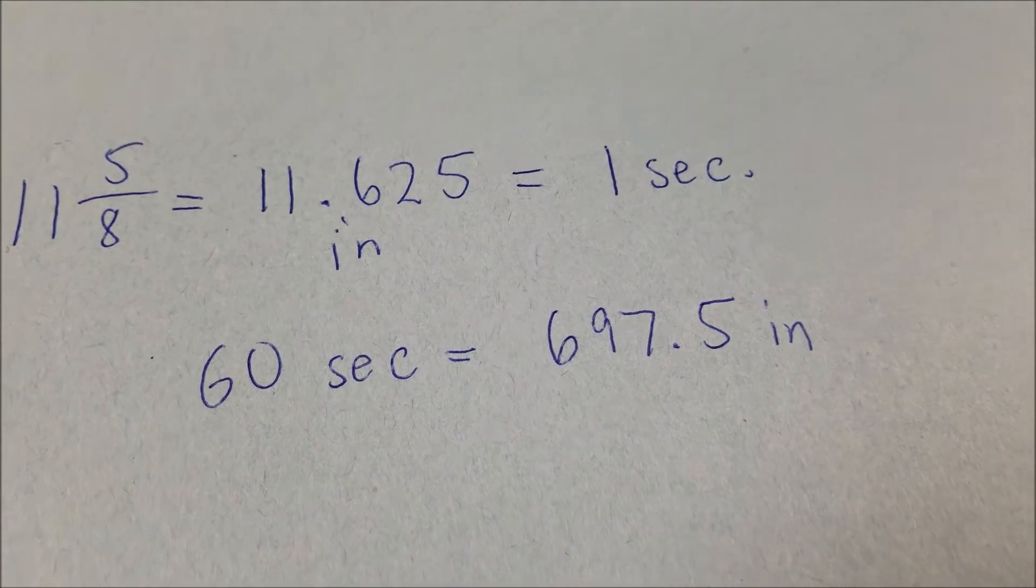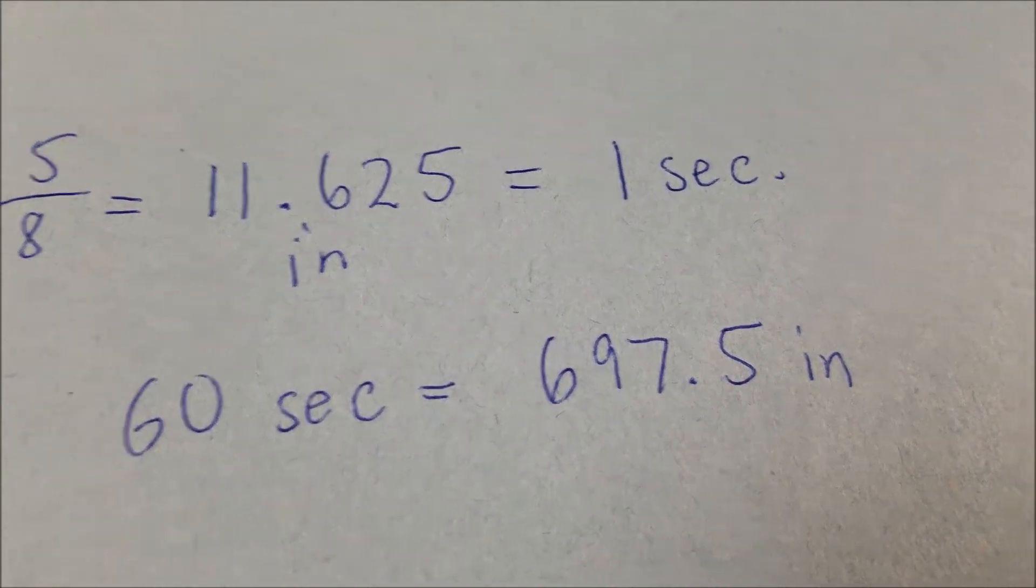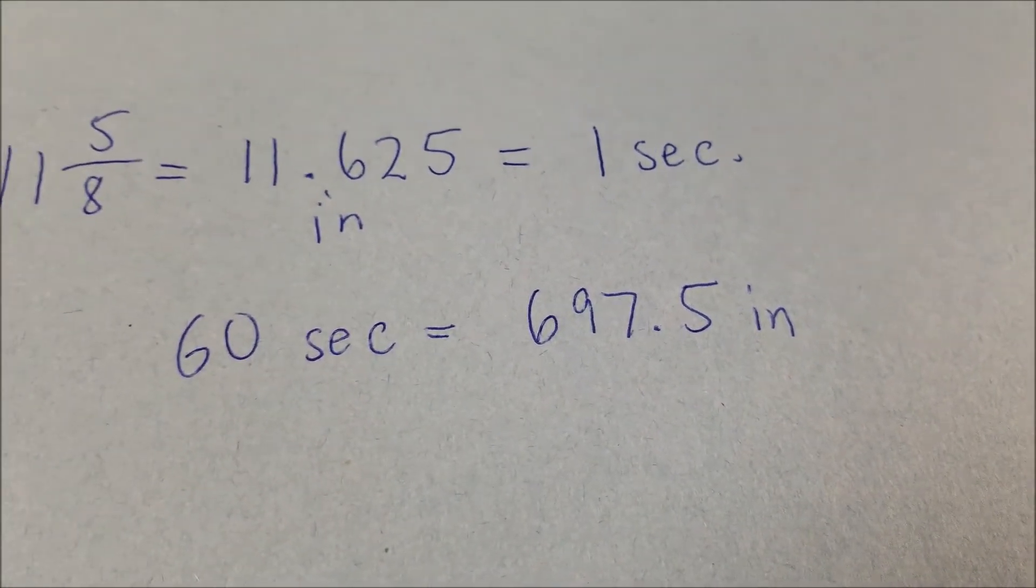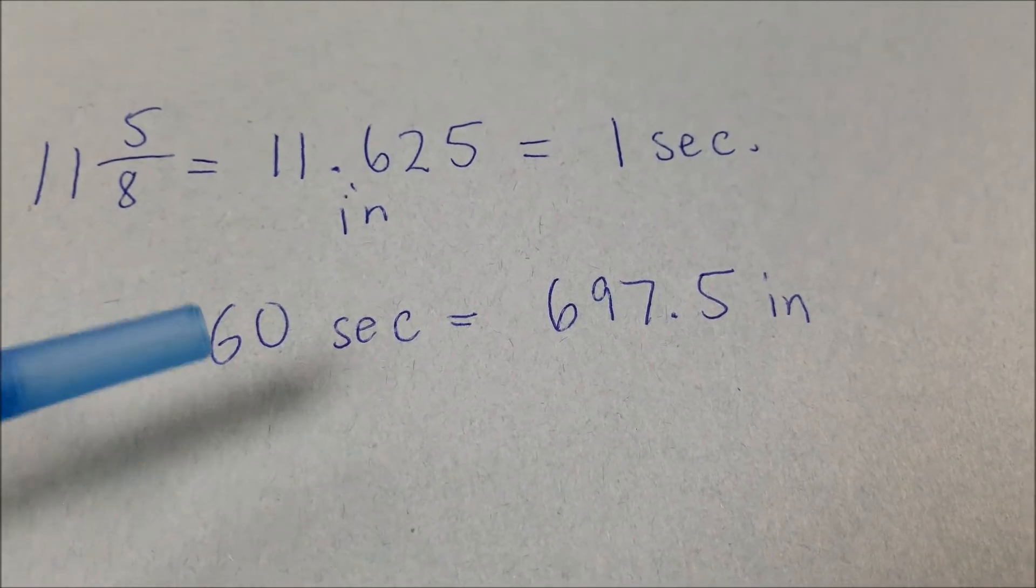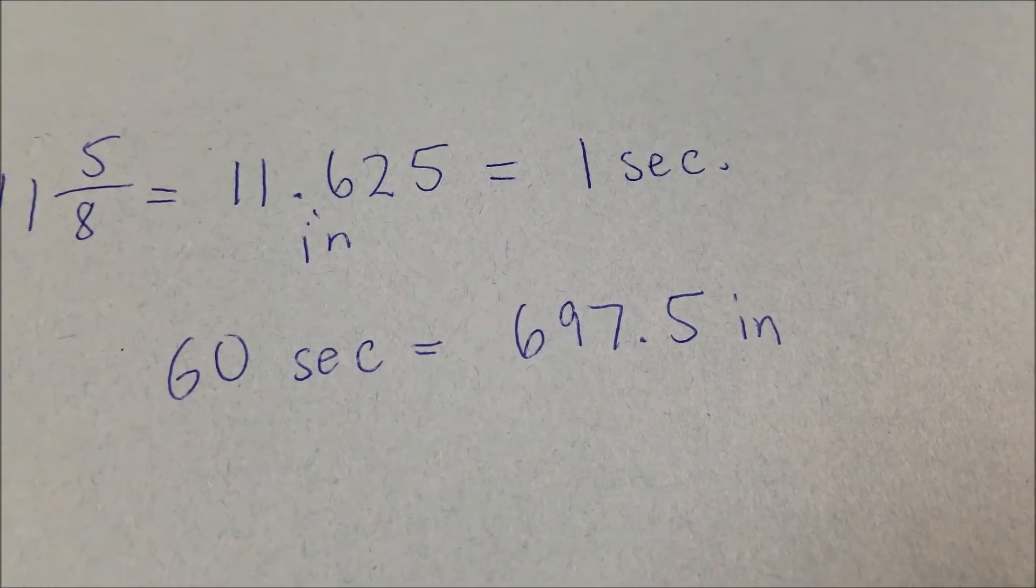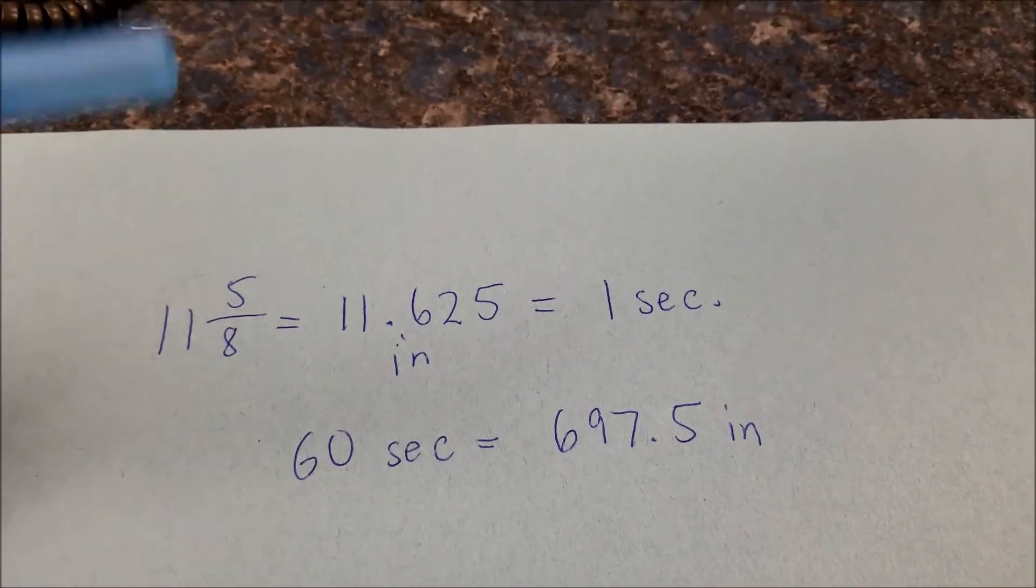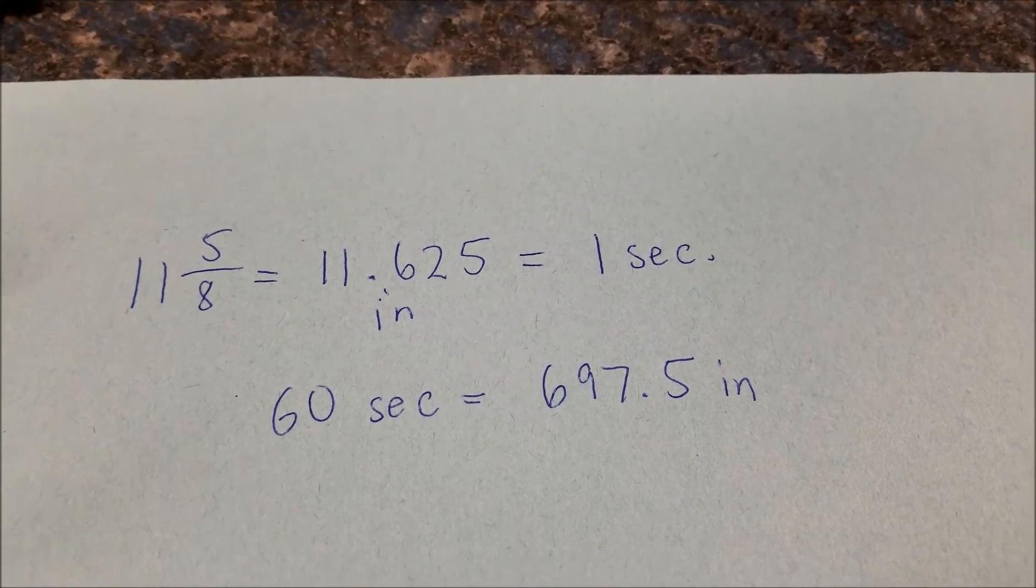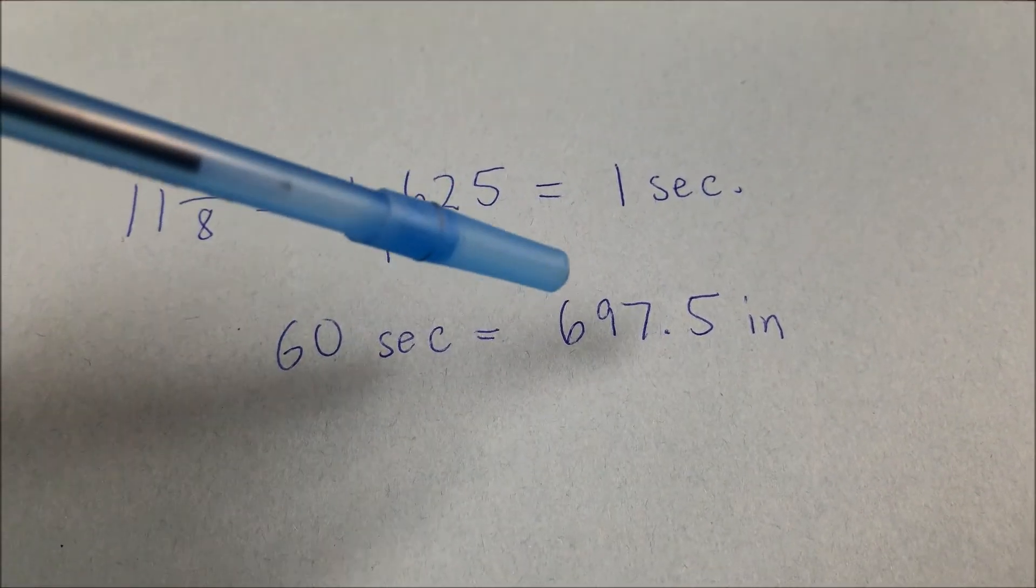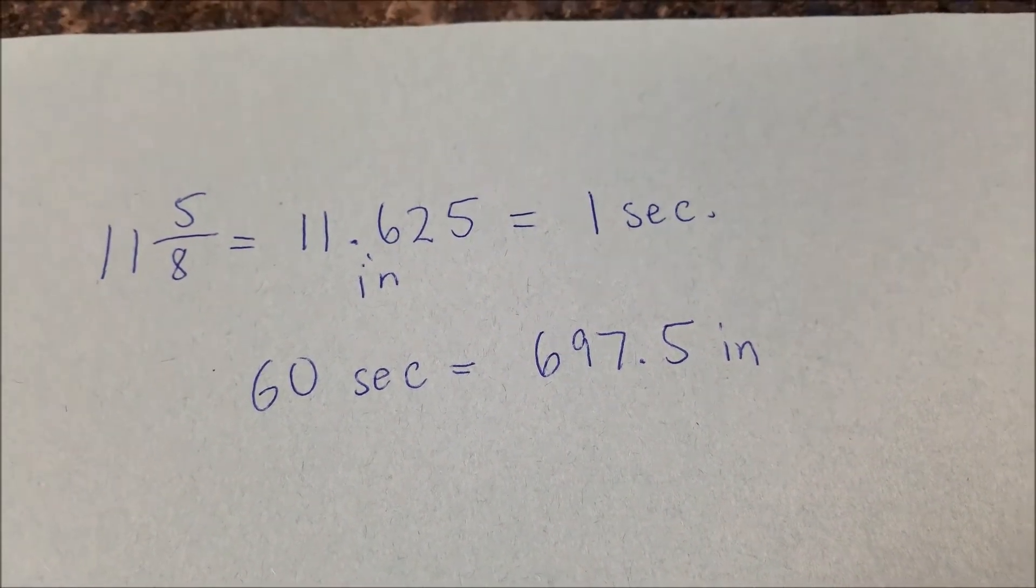Okay, I'm back. I multiplied 60 by 11.625. And I got 697 and a half inches. So if we let this robot go for a minute, it would travel 697 and a half inches. Now what I want to do is I want to now convert and go higher and higher until we can get this miles per hour. So I'm now going to divide 697.5 inches and get that into feet. I'll be back.